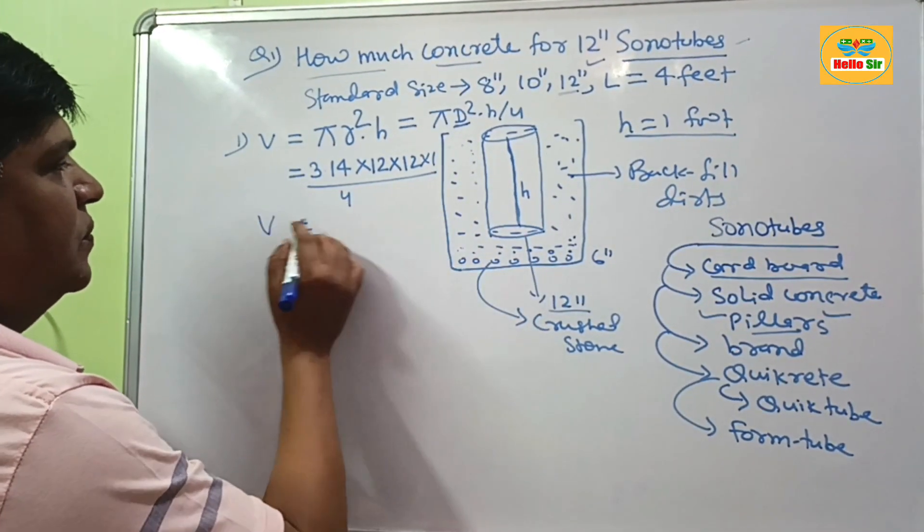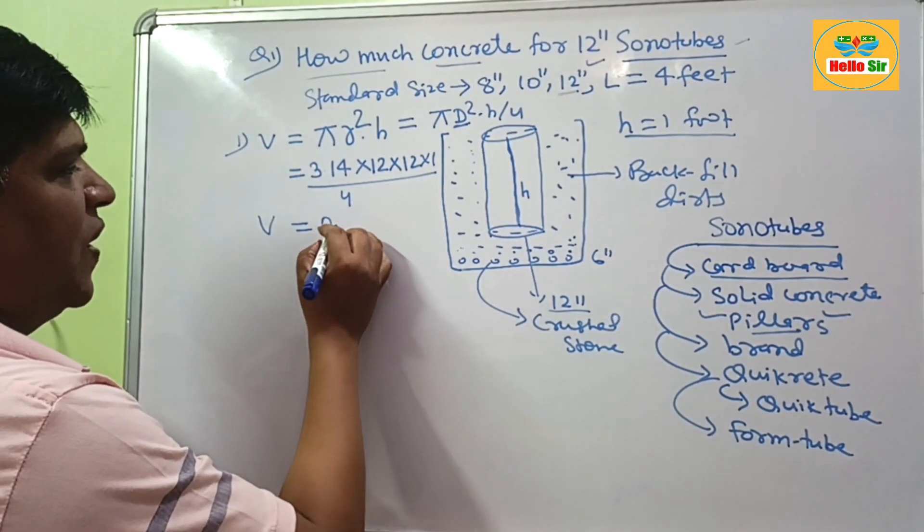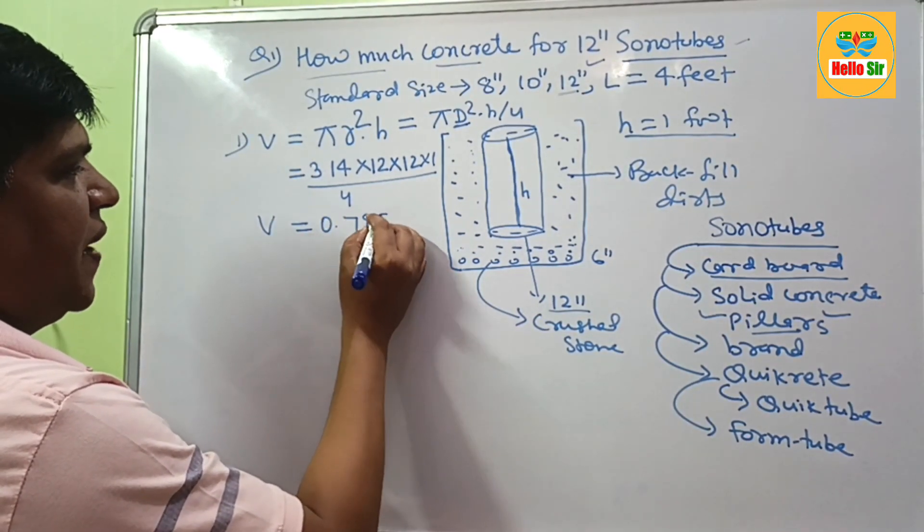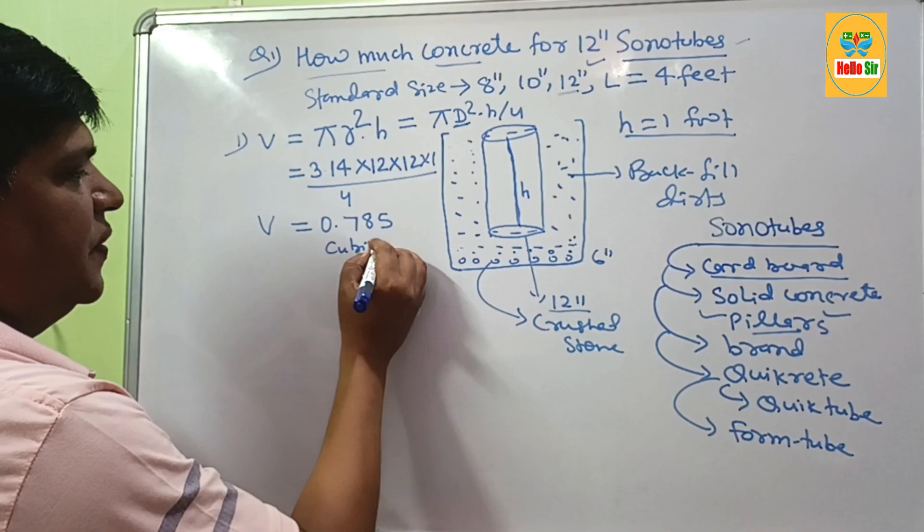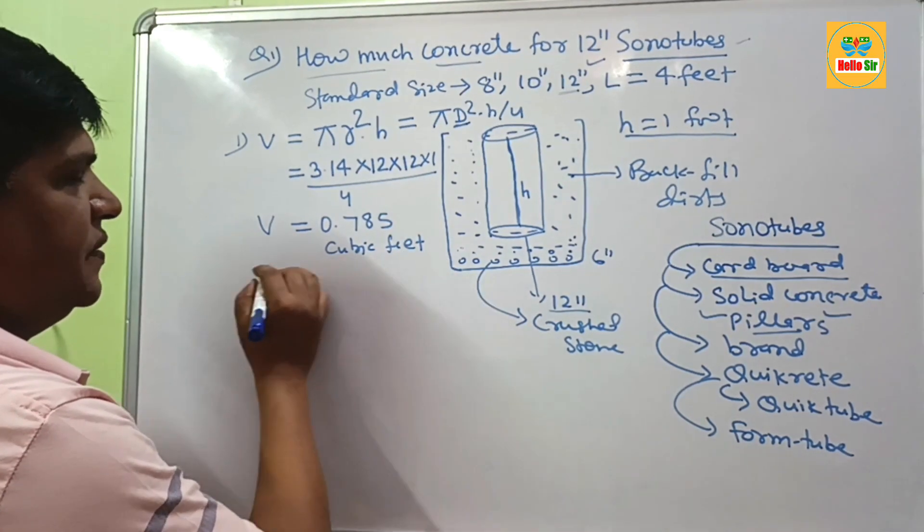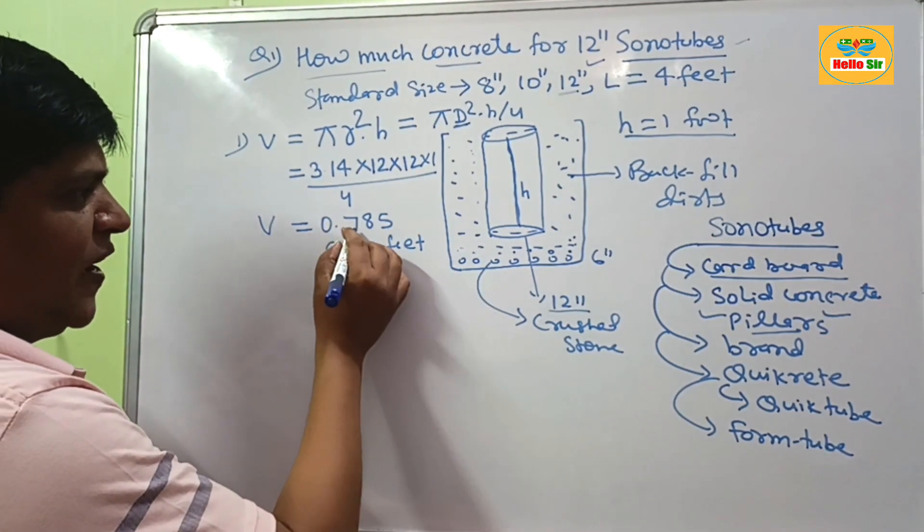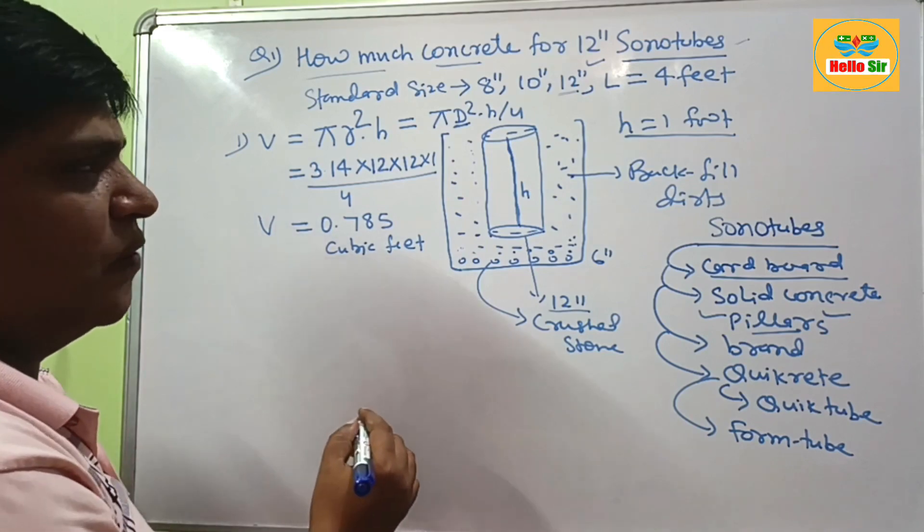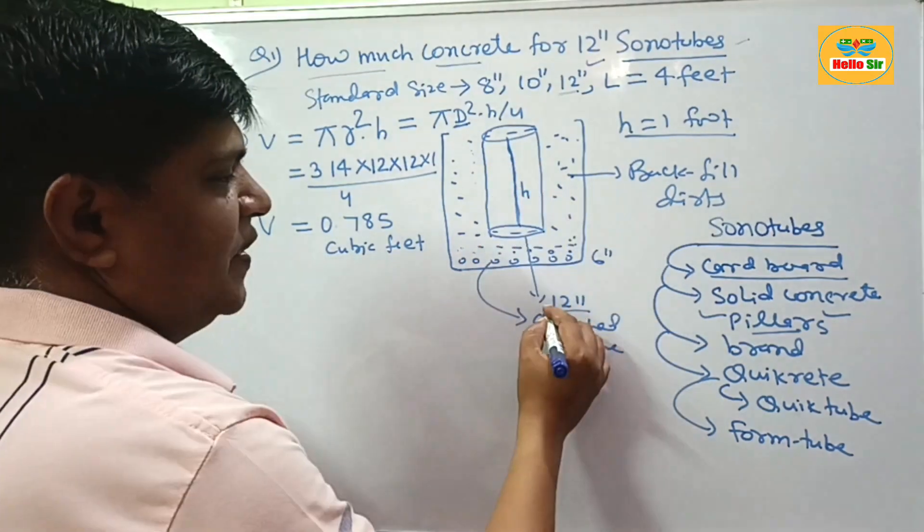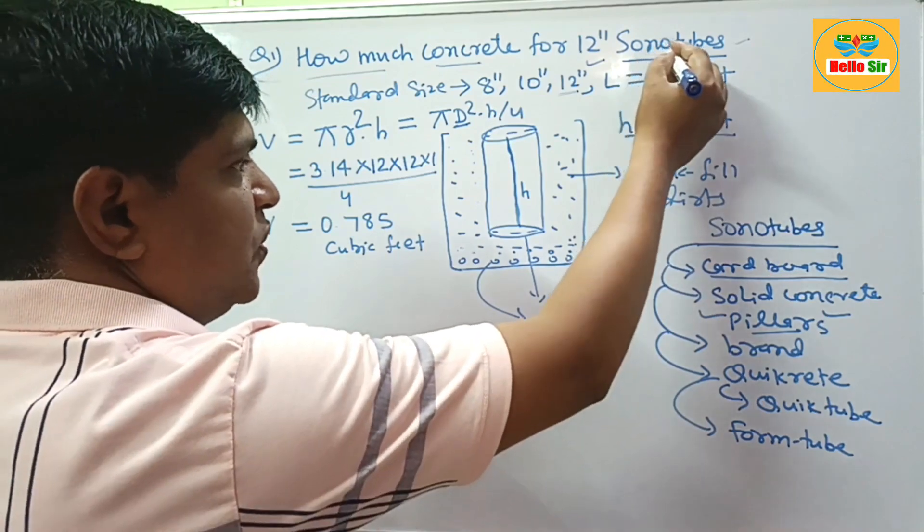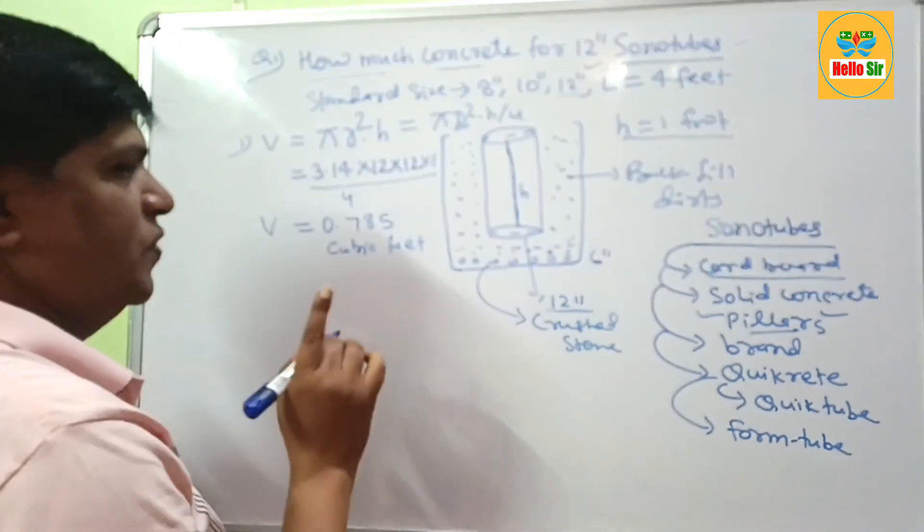This comes to about 0.785 cubic feet. This means 0.785 cubic feet of concrete is required to fill the 12-inch diameter sonotubes per foot. For 1 foot, remember.